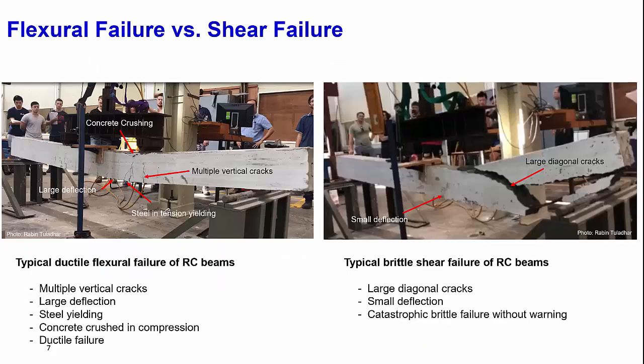The typical flexural failure is characterized by multiple vertical cracks, large deflection in the beam, and the steel starts to yield before the concrete crushes — it is a very ductile failure mode. Whereas shear failure is a very brittle mode: there is no significant deflection in the beam, the failure is very sudden and abrupt, and it is characterized by large diagonal cracks.